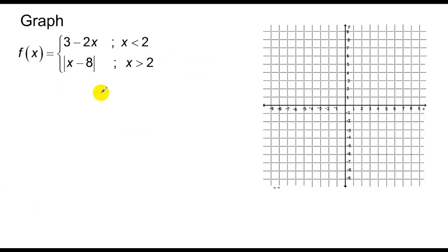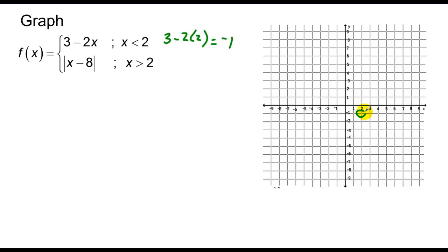This gets more complicated because we have an absolute value graph, but we start the same way. Since one piece is a line, I find what happens at x equals 2 by plugging it in — I get negative 1. That point can't be included, so I place an open circle at (2, negative 1). My y-intercept is 3, so I connect those two points with an arrow going left.